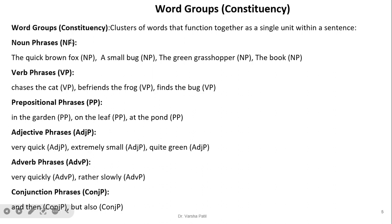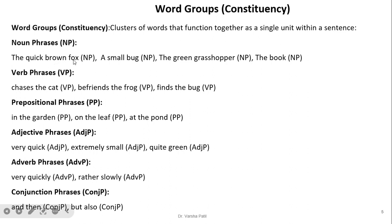Word groups, or constituency, are clusters of words that function together as a single unit within a sentence. This is very important because every parser finds out a word group to determine the syntactic relationship between different words in a sentence. For example, a noun phrase like 'the quick brown fox', 'a small bug', 'the green grasshopper', or 'the book' — these show the variety of ways a noun phrase can be formed.